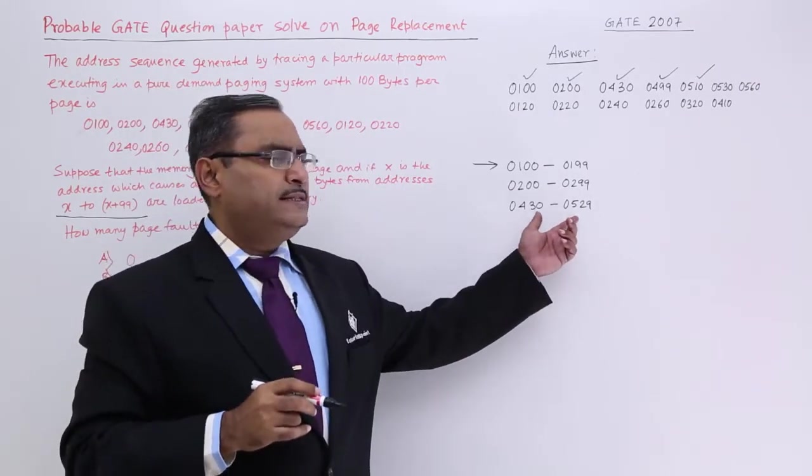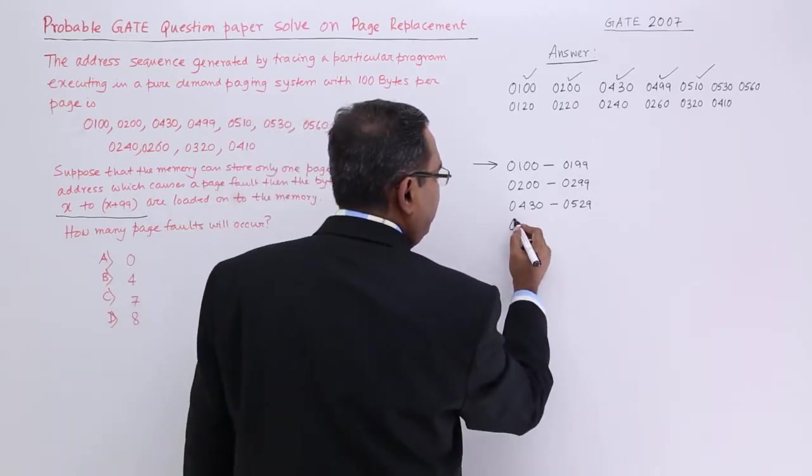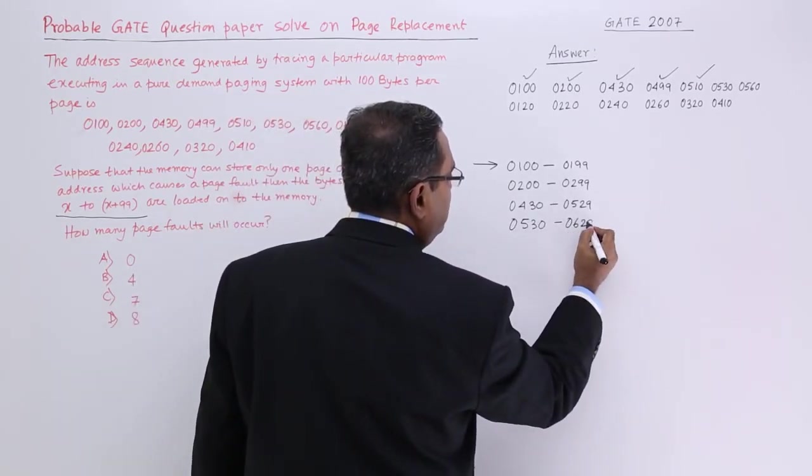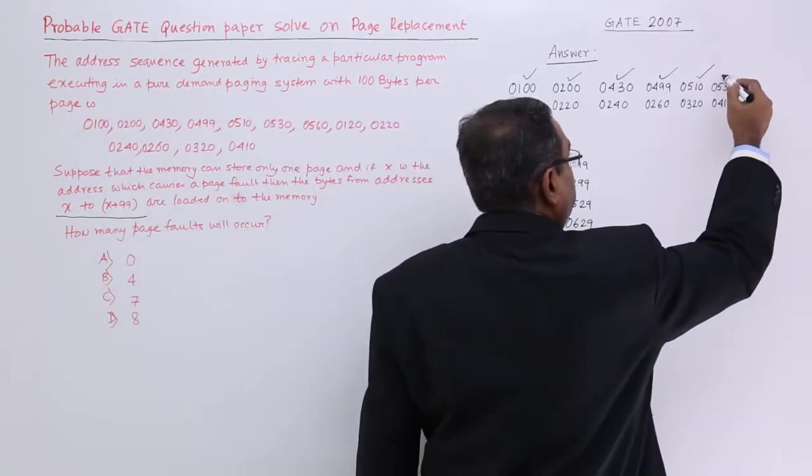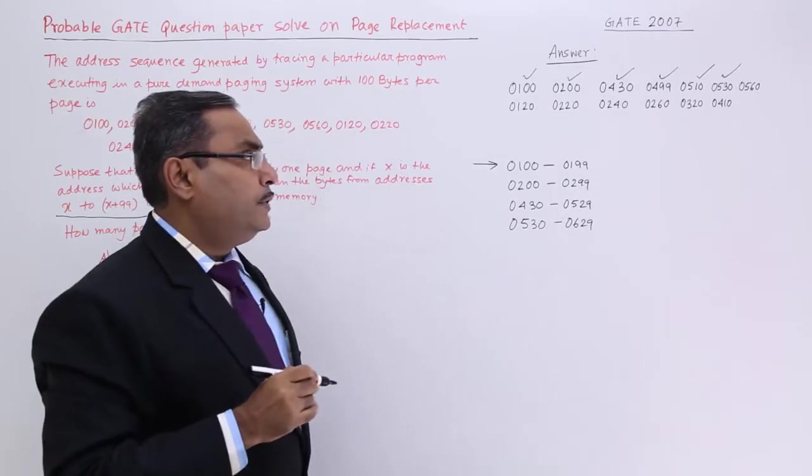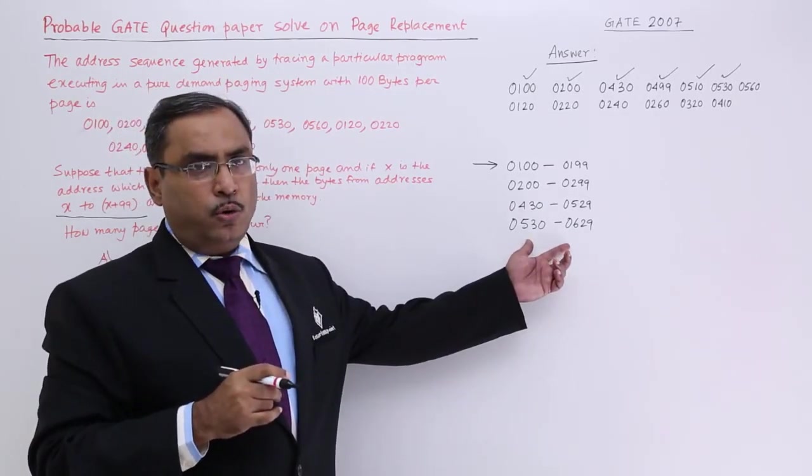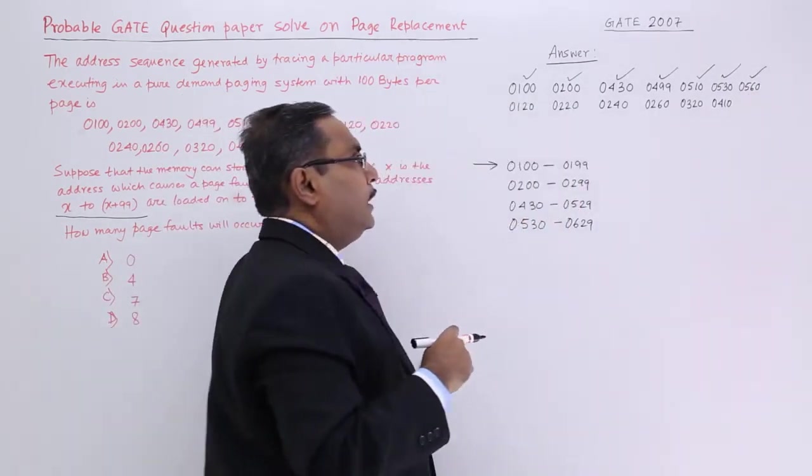Now 530 has just missed it, just missed the limit. So I shall load 530 to 629 up to that. 530 has been handled. Now, 560 is falling in this range. So I need not load any page. It is a page hit.